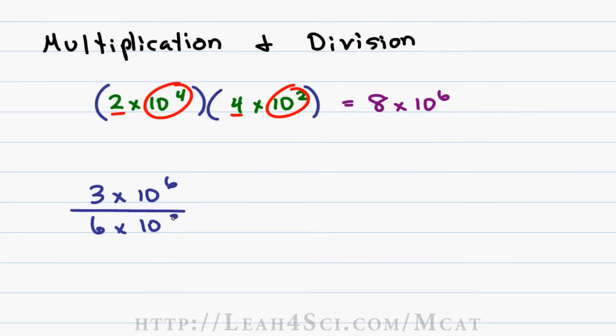For division, you divide your numbers and then subtract your exponents. In this case we have 3 times 10 to the 6th divided by 6 times 10 to the 3rd. We'll set that up as follows.